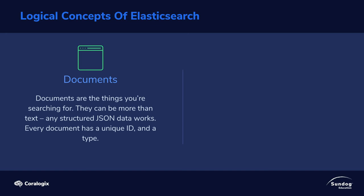Elasticsearch works on top of JSON formatted data. JSON is basically just a way of encoding structured data that may contain strings, numbers, dates, or what have you, in a way that you can cleanly transmit across the web. You'll see a ton of examples of this throughout the course so it'll make more sense later on. Every document can have a unique ID, and you can either explicitly assign one yourself or allow Elasticsearch to assign it for you.